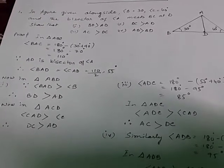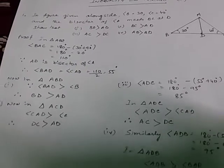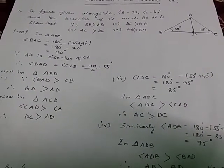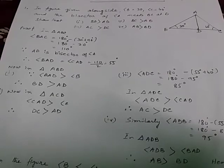Now let us come to triangle ABD. Here angle BAD is greater than angle B. Therefore BD is greater than AD.